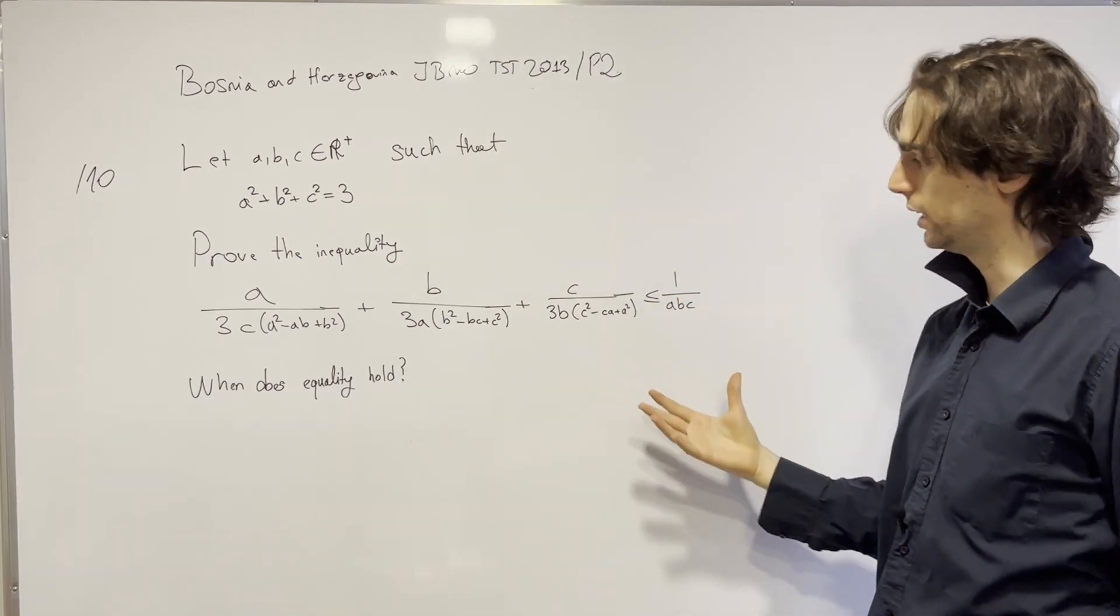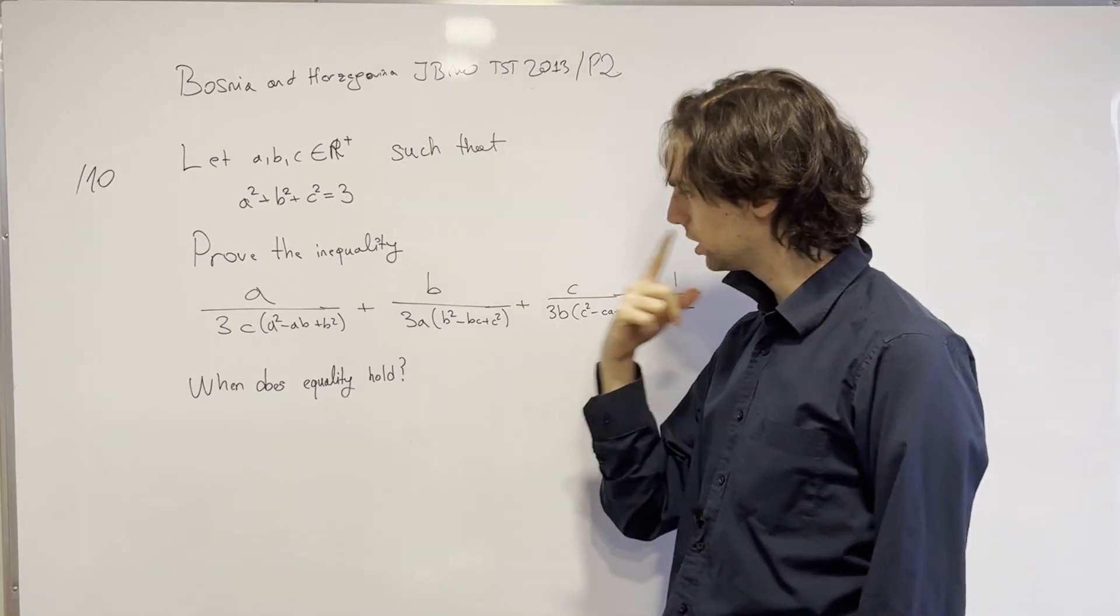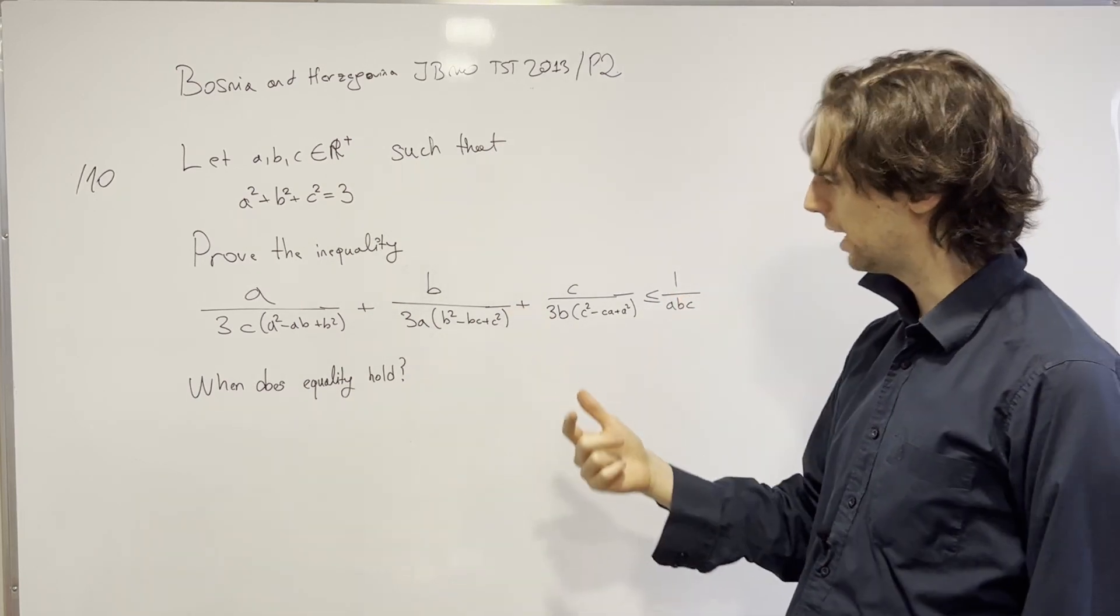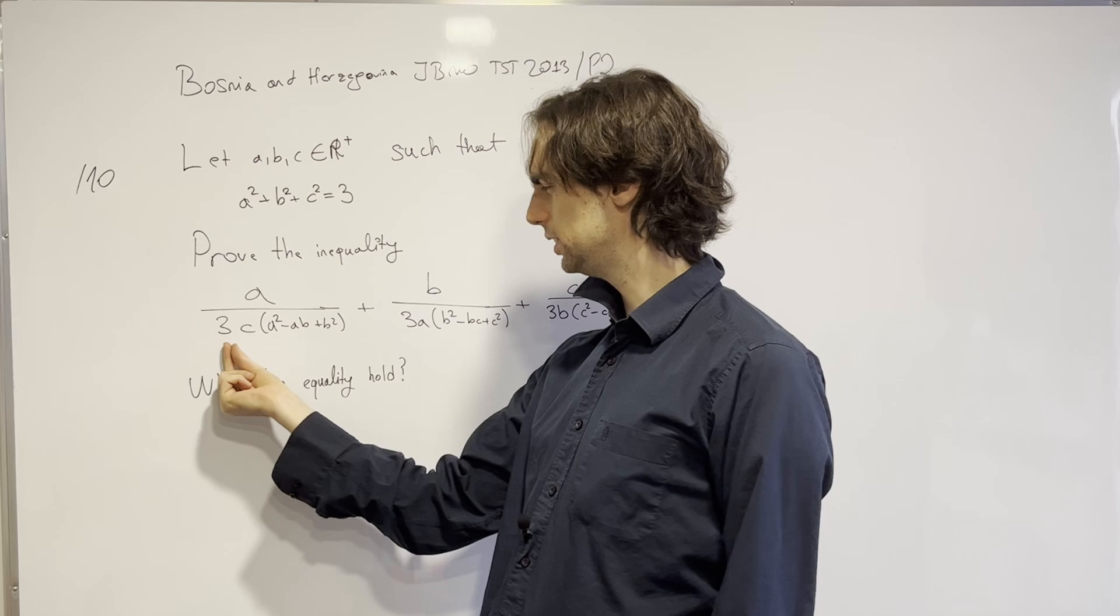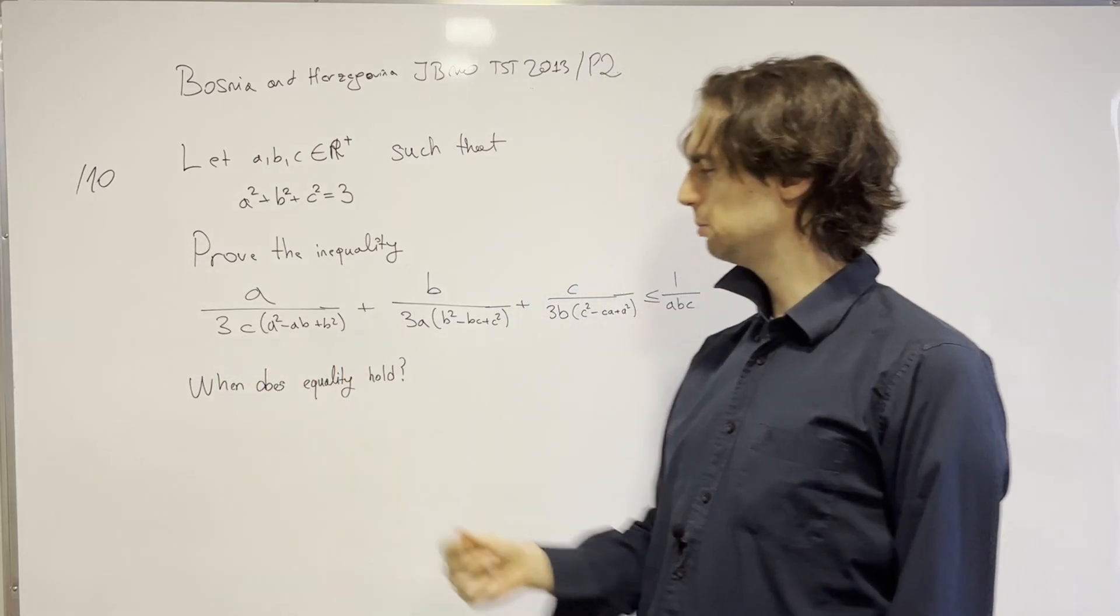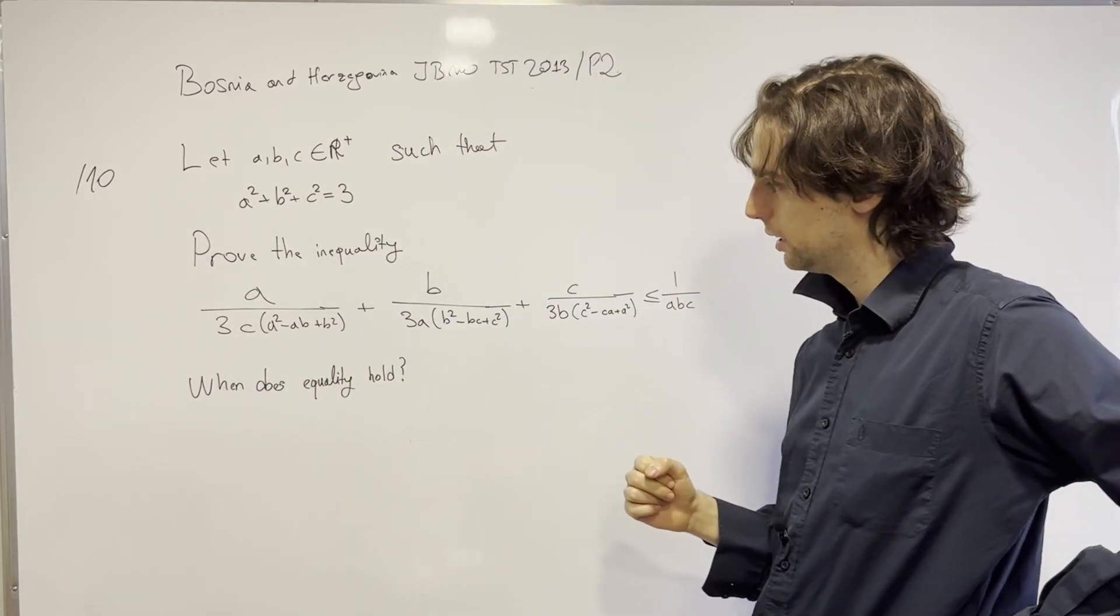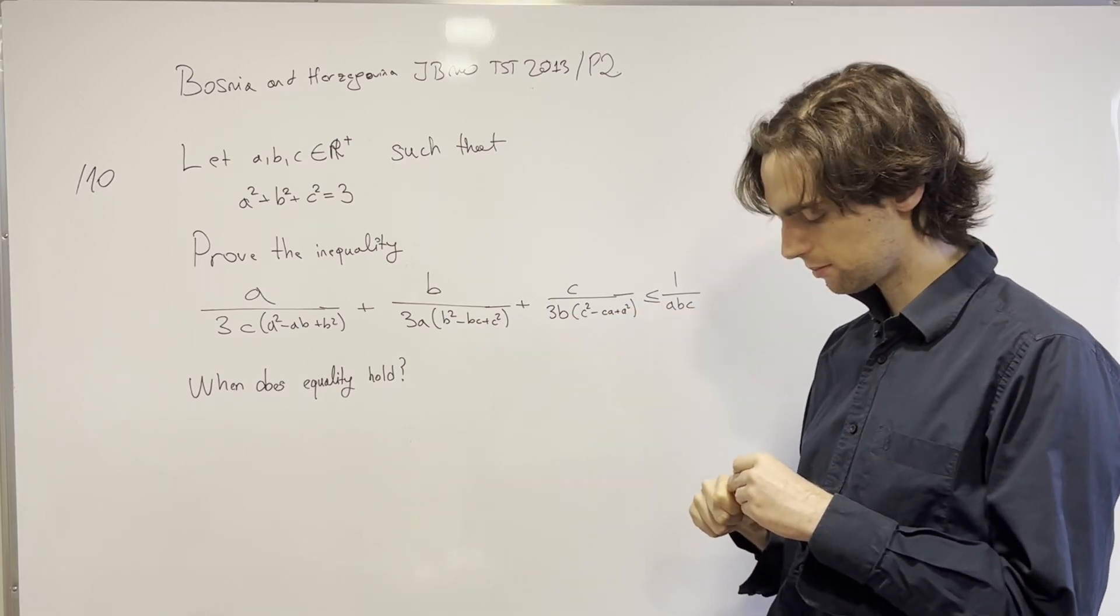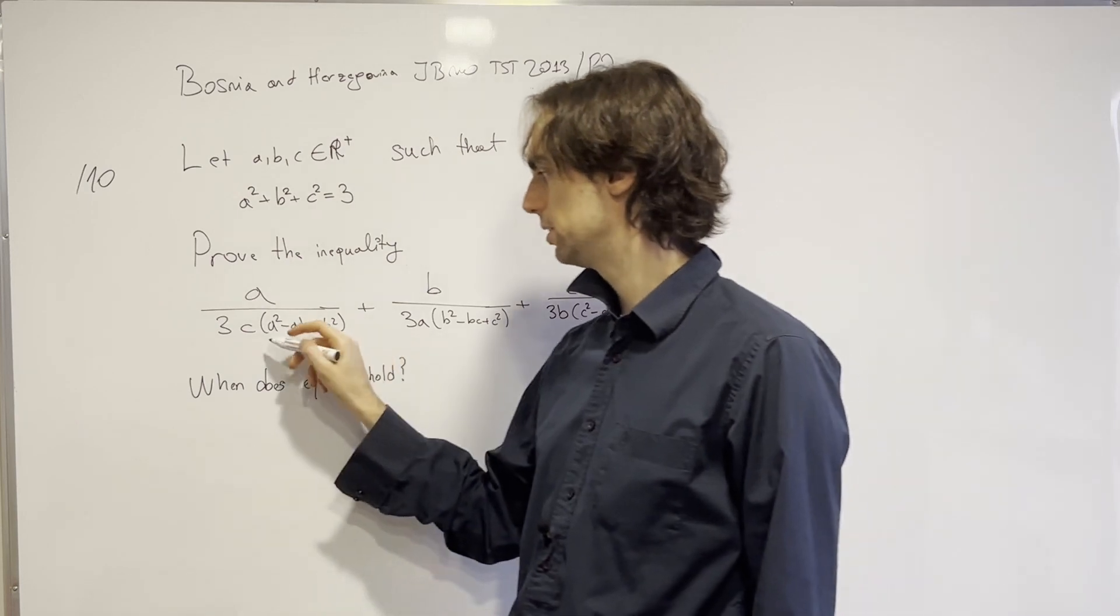So the first idea is, well, we need to prove this direction of inequality. And what do we have? We have a over 3c, a²-ab+b². One way of thinking about this is, what do I have here?